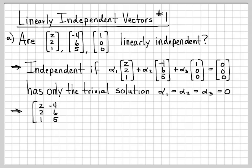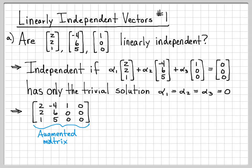Let's go ahead and form the augmented matrix. The first column is the first vector, the second column is the second vector, the third column is the third vector, and then the fourth column is the all-zero vector, because that's what we're seeing if we can find a solution for. That's our augmented matrix. We'll perform row reduction — I have lots of other videos where we go through those details exactly.